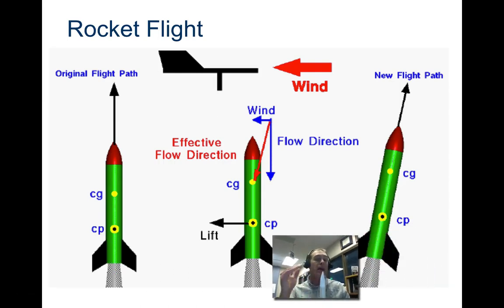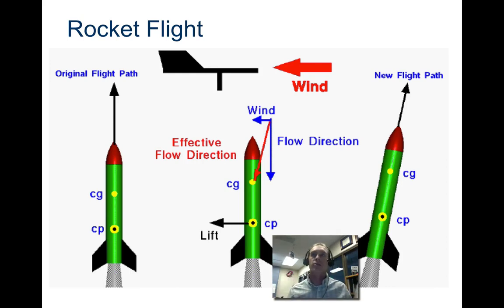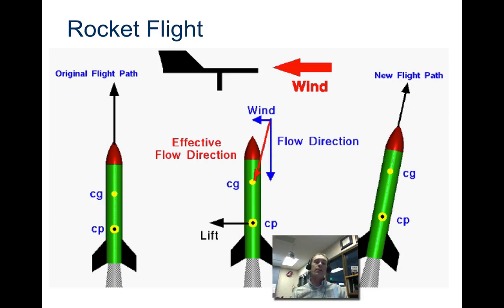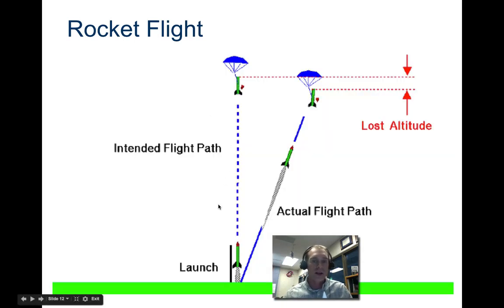For rocket flight: if your intended flight path is straight up but there's wind, you'll need to tilt the rocket into the wind so it actually flies straight up. Pay close attention to wind direction when you're outside — otherwise you'll be chasing the rocket for miles. The rocket itself will fly relatively straight even in decent wind, but once the parachute deploys it really glides on the wind, so you have to be careful.